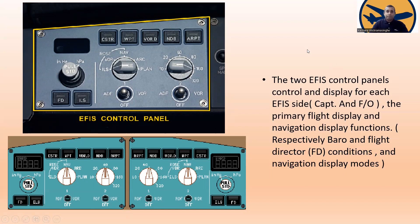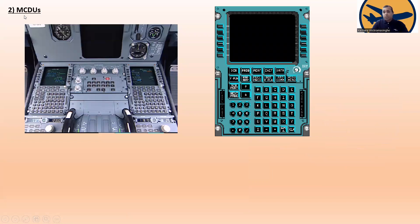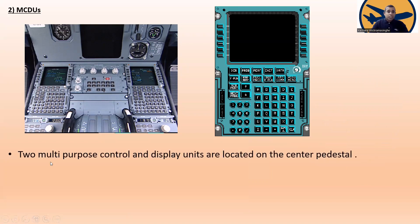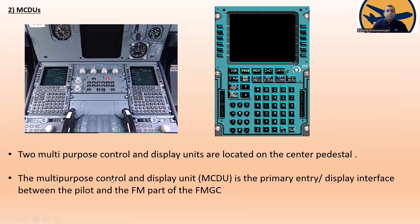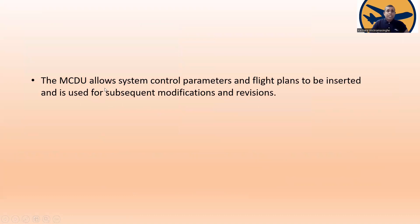Number two: MCDU — Multipurpose Control Display Unit. You can see the MCDU; there are two MCDUs. This instrument is used especially for the BITE test in Airbus aircraft. The multipurpose control and display units are located on the center pedestal. The MCDU is the primary entry and display interface between the pilot and the flight management part of the flight management guidance computer.